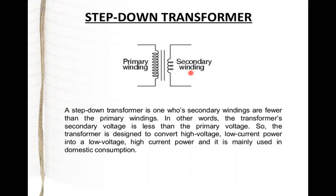Step-down transformers are basically used for domestic appliances, especially mobile chargers. A mobile charger uses a transformer to step down from 220V input to 5V output. That 5V AC output is then converted to a 5V DC through rectification, and that pure DC voltage is given as input to the mobile to charge it every day.